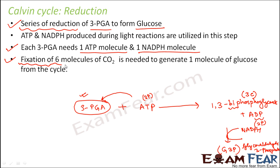Another important thing to note here is that fixation of six molecules of carbon dioxide is needed to generate one molecule of glucose from the cycle. If you want to produce one molecule of glucose, then six molecules of carbon dioxide should be fixed — that means six molecules of carbon dioxide should be added to RUBP. In the previous slide, I just wrote the equation for one molecule of carbon dioxide. But you can only add one molecule of carbon dioxide at once. So if six molecules of carbon dioxide need to be added, that means the entire Calvin cycle should run for six times.